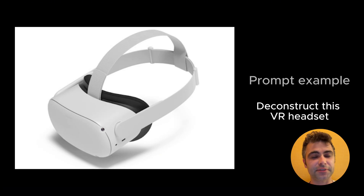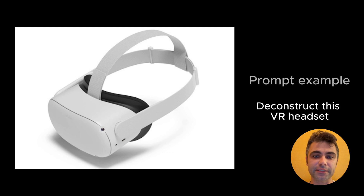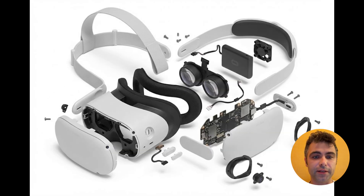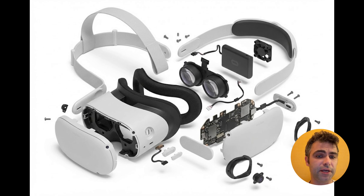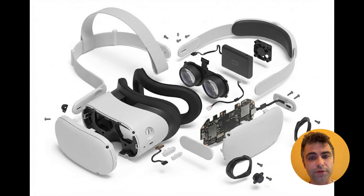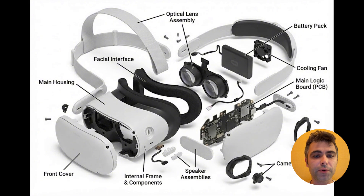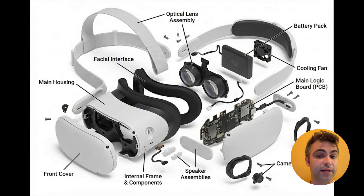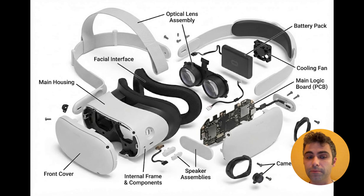Finally, let's deconstruct a physical product. I will ask NanoBanana to take this VR headset apart. And here is what I get. The output is not ideal, but similar to the previous example with annotations of mobile UI, this can be a good start for initial analysis. And actually, we can submit a follow-up prompt asking NanoBanana to annotate the image. And we will get this result, which is cool.